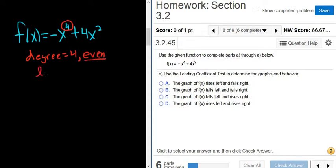And the leading coefficient is the number right in front of this term, so negative 1. And what we care about is whether it's positive or negative. In this case, it's negative. So we have even degree and a negative leading coefficient.